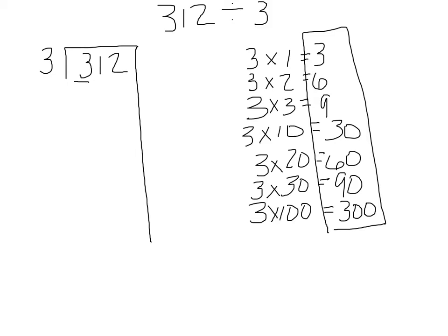We use this multiple list we've created to take away from the dividend. We find the multiple that is closest to the dividend without being larger, because we have to subtract, so it must be smaller. In this case that is 300. They write 300 underneath and draw a line to remind them to write what multiple of 3 that is — the 100th multiple, or 3 times 100, which is 300. Then they subtract.